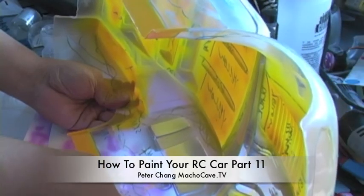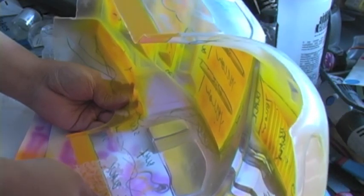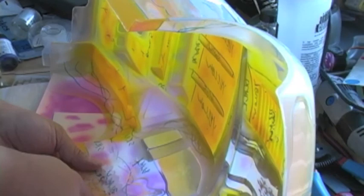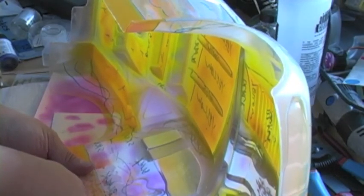Peter Chang, and welcome to part 11 of our how to paint your RC car build. In this part of the guide I'm going to use my indispensable Craig Frazier skull master nano art tool stencil.